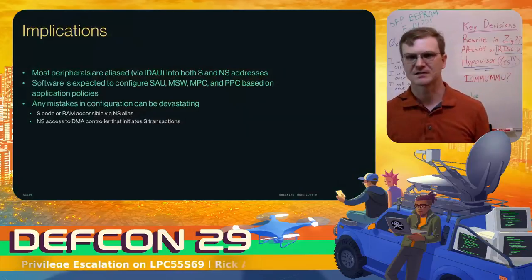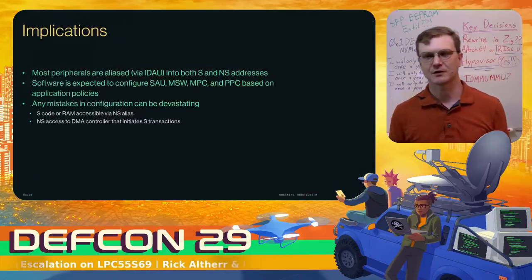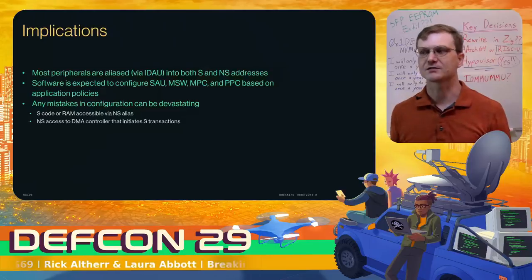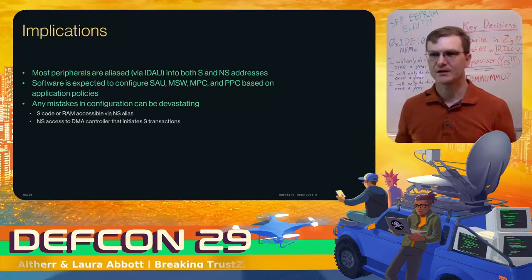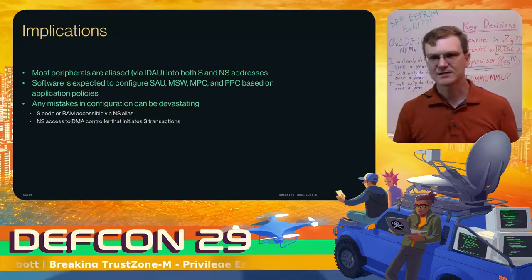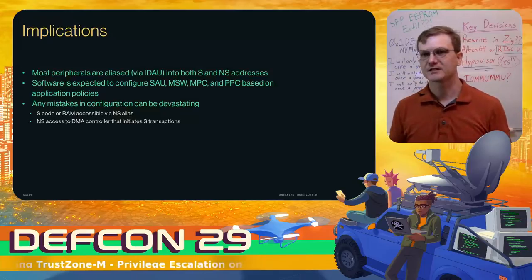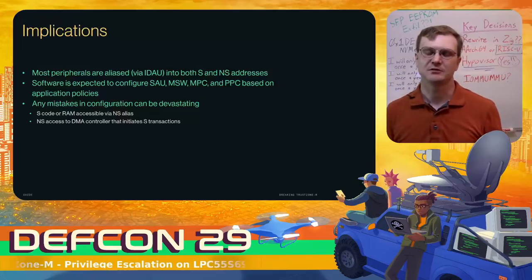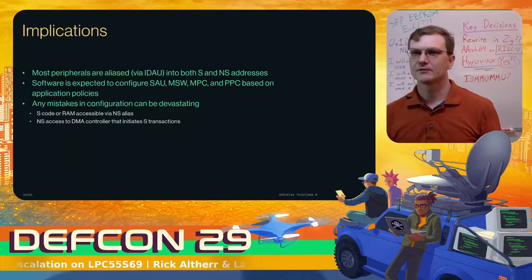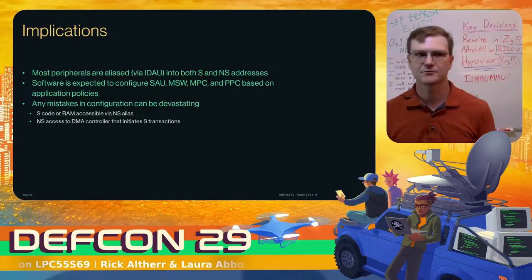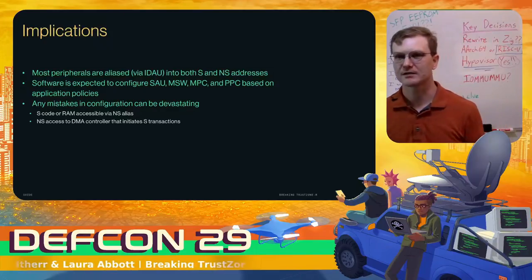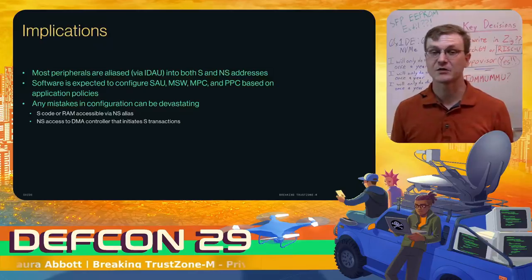When you put this all together you get something like the AHB bus matrix diagram from the LPC-55-S69 user manual — it starts to look like a network flow diagram with firewalling rules. The IDAU, SAU, and MSWs set your ingress policy and labeling, and then you enforce policies on the egress side based on source and security attribute. Most peripherals show up in both secure and non-secure ranges. The rest of the system is designed to be configured by application software — the SAU, MSW, MPC, and PPC — to set up whatever policies you want. Given this level of configurability, there's a lot of potential for mistakes with devastating consequences.